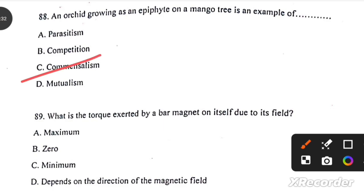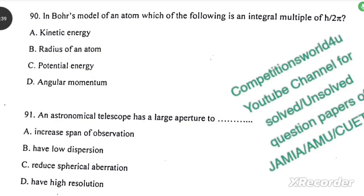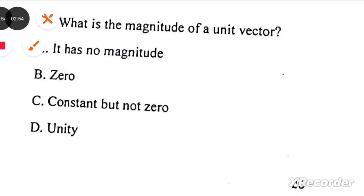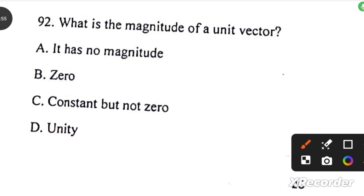What is the torque exerted by a bar magnet on itself due to its field? Zero. In Bohr's model of an atom which of the following is an integral multiple of h by 2 pi? Angular momentum. An astronomical telescope has larger aperture due to have high resolution. What is the magnitude of a unit vector? Unity.